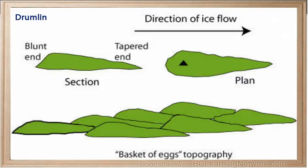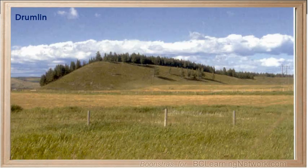Drumlins are tear-shaped hills that are formed beneath the glacier and are created by the glacier depositing rocks rather than eroding the landscape. A drumlin landscape is characterized by soft rolling hills and is often called a basket of eggs landscape. The position of the drumlin tail or pointy end indicates the direction the glacier was going in, as it moves from the blunt towards the point.